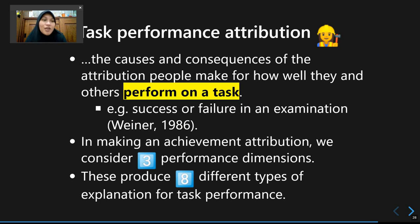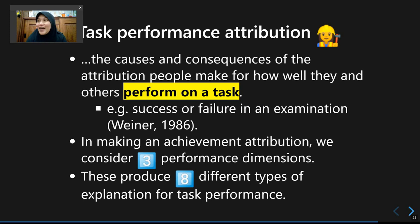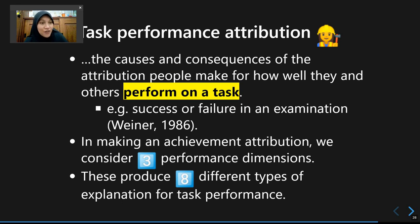The last part of this lecture concerns how we attribute the success or failure of individuals when they complete certain tasks. For example, if a friend gets an excellent grade in an exam, we seek an explanation for that success or failure. We look for explanations about someone's performance based on three dimensions, which together yield eight different types of explanations for why someone fails or succeeds in a task like an exam.